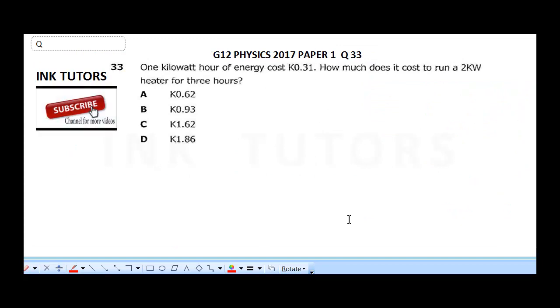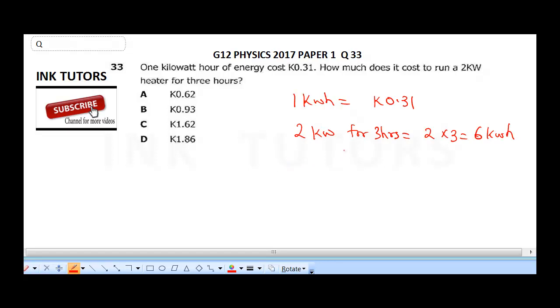Now, the next question says, 1 kilowatt hour of energy costs K0.31. How much does it cost to run a 2 kilowatt heater for 3 hours? From this question, it was established that 1 kilowatt hour, it costs K0.31. Now, this means, if we have 2 kilowatt hour, first of all, for 3 hours, it's going to be, in kilowatt hour, it's going to be 2 times 3, which will give us 6 kilowatt hour.